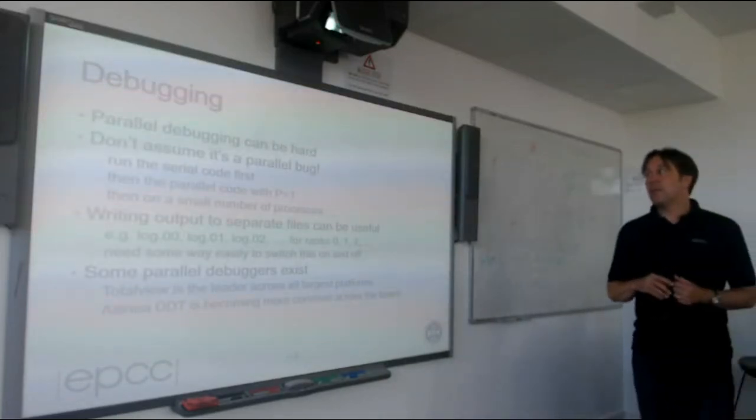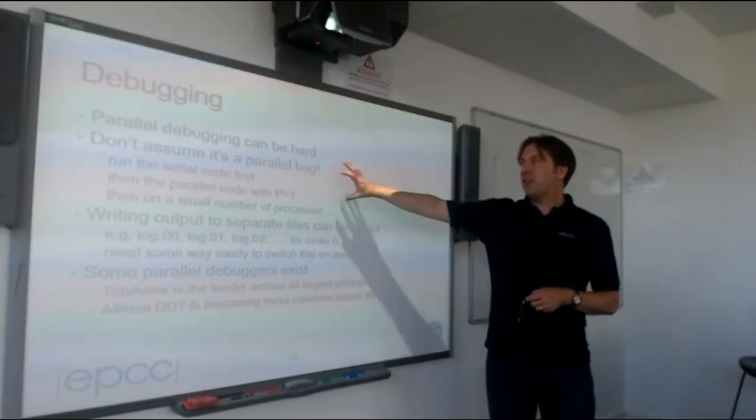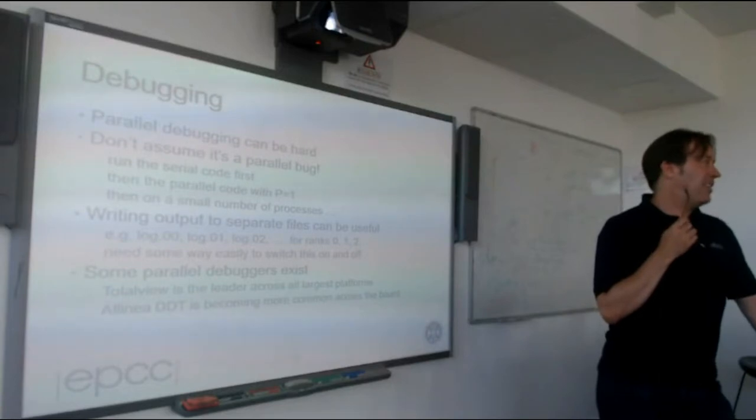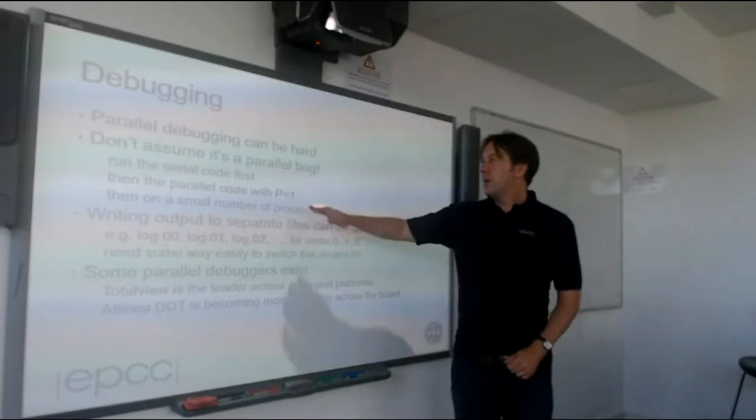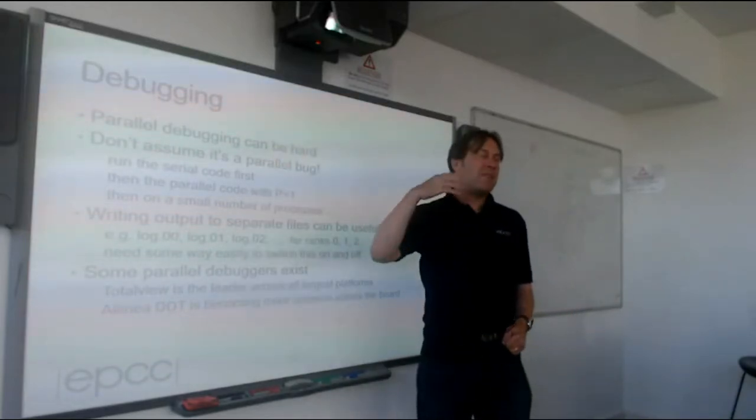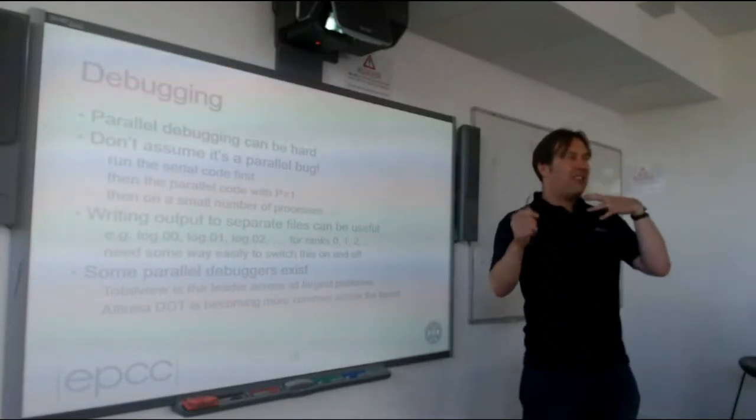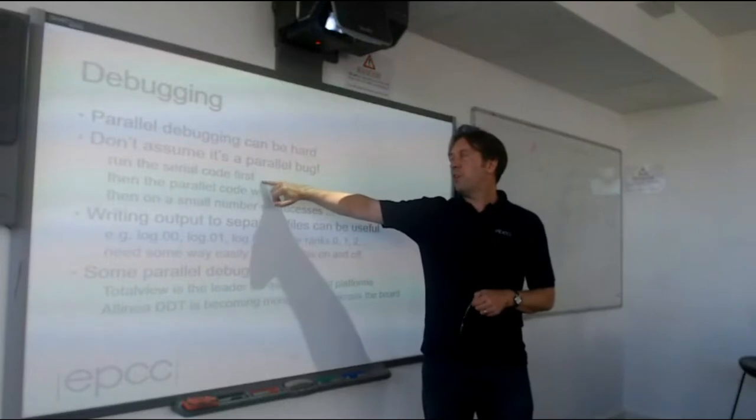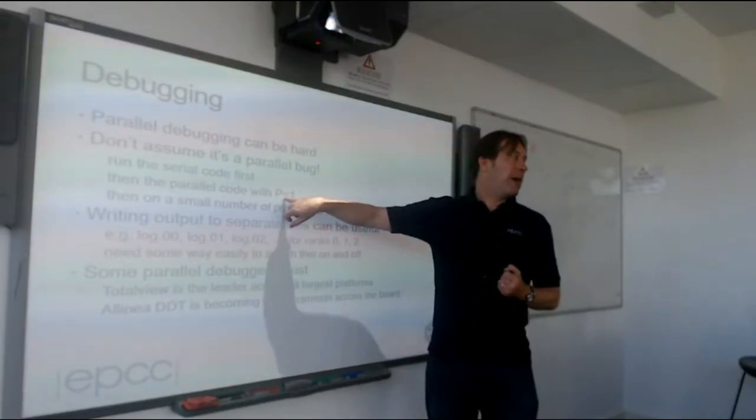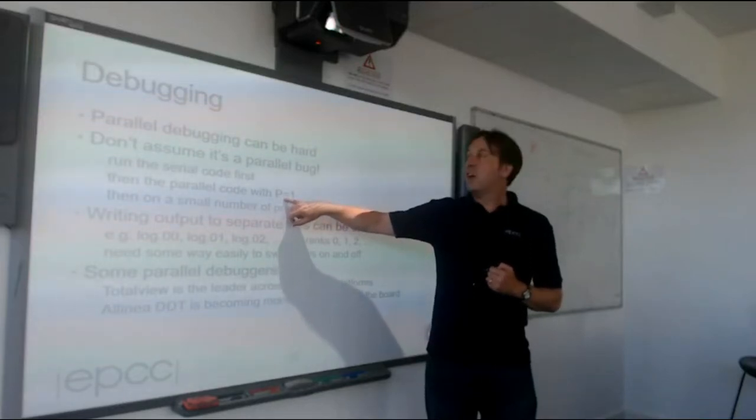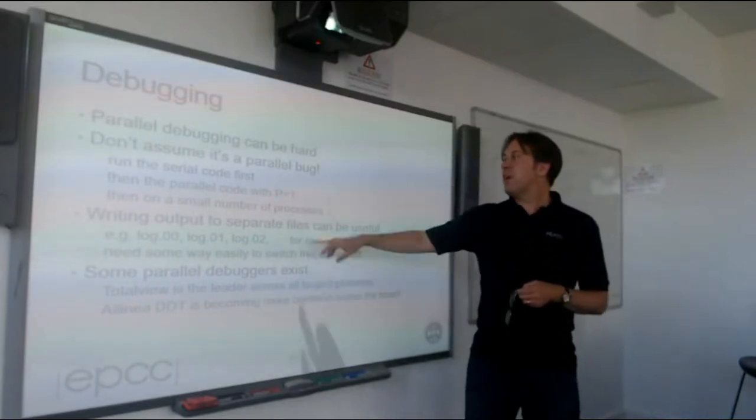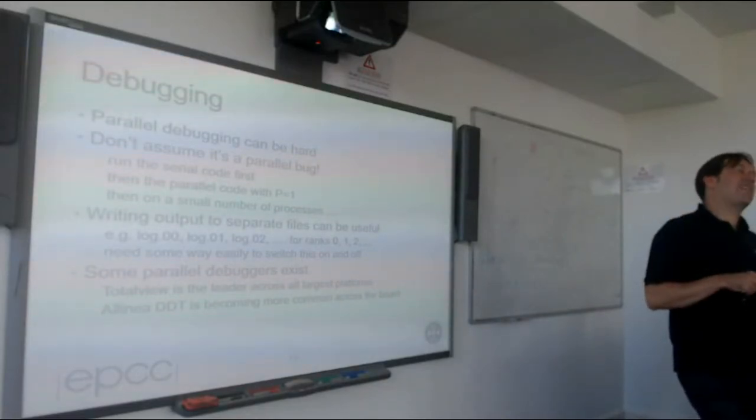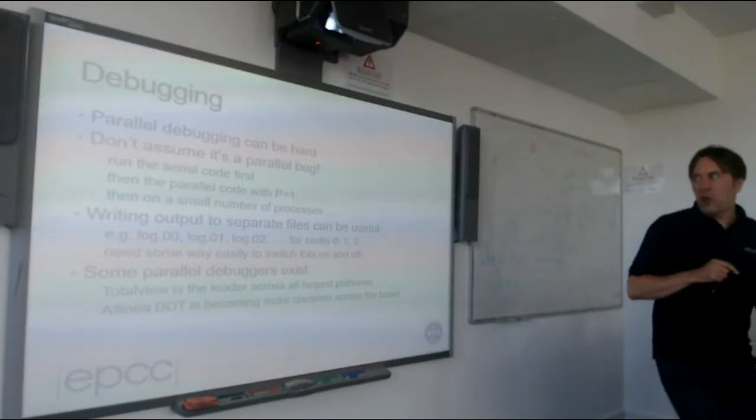So if I want to debug it, parallel debugging can be hard. The biggest mistake people make is they assume it's a parallel bug. It's human nature to say, I'm writing a really big complicated code. I've not made a stupid error. It must be something really complicated and deep. But most errors you make are just stupid errors. We all make them. So run the serial code first. If you get a bug, people will say, my code goes wrong on 524 processors on Archer. They'll spend ages trying to debug it, which is a nightmare. Go back and check. Maybe the code is just broken. So run it on one processor. Run it on the serial code. Then run the parallel code with P equals 1. That will pick up MPI bugs. If you call the MPI function with wrong arguments, it will crash. Then run on a small number of processes. It is unusual for parallel bugs only to show up on 524 processors. It does happen. But most bugs will show up on a small number of processes.